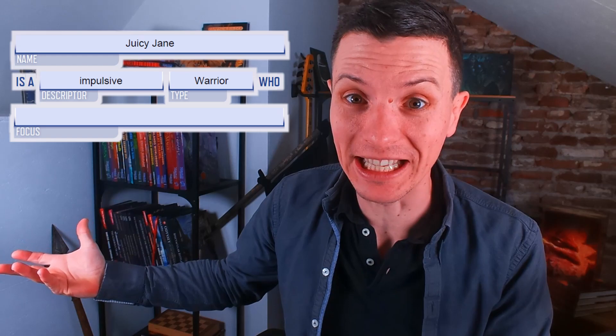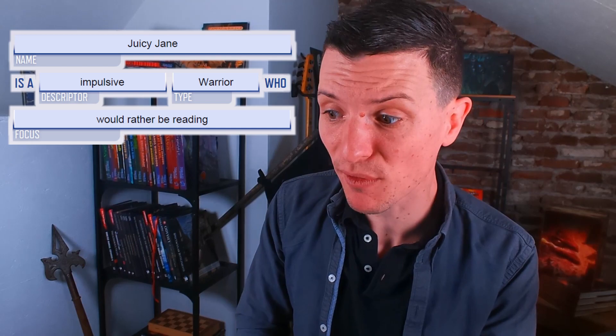Let's say our character's name is Juicy Jane. All we need for her is a descriptor, a type, and a focus. The easiest thing to start with is the type, because in a very basic sense that's kind of like your class in fifth edition and Pathfinder, although you'll quickly find that this system is way more open and everything is combinable with everything. In the basic rulebook there are four types to choose from: the warrior, the adept, the speaker, and the explorer. We're going to make Juicy Jane a warrior, so right now she is a blank warrior who blanks. For her descriptor, let's make her impulsive — so now Juicy Jane is an impulsive warrior who blanks. For her focus, I went with 'would rather be reading,' so now Juicy Jane is an impulsive warrior who would rather be reading. You can create your character sentence and then build your character concept around that, or build your concept first and then craft a sentence that fits.